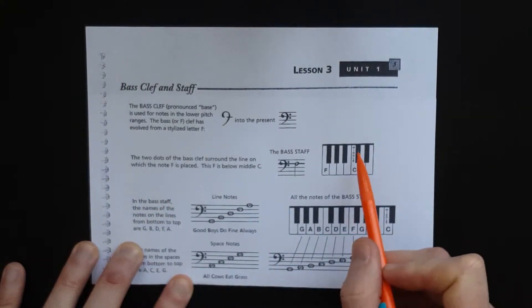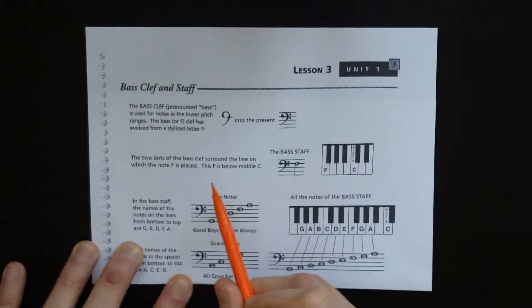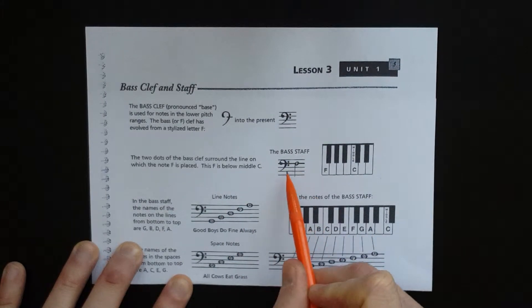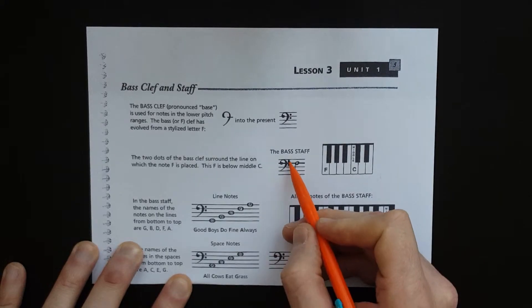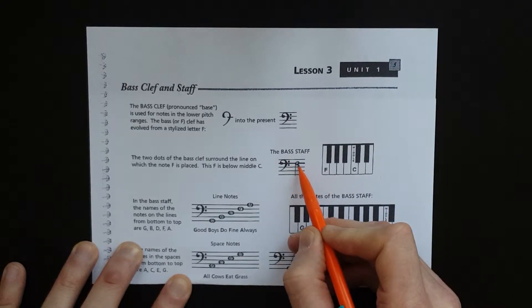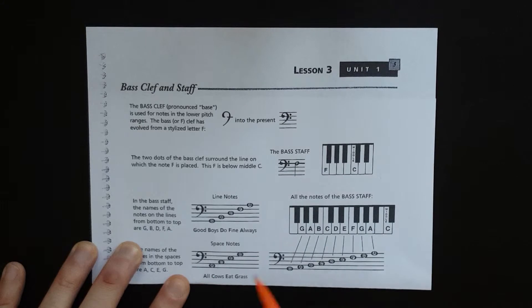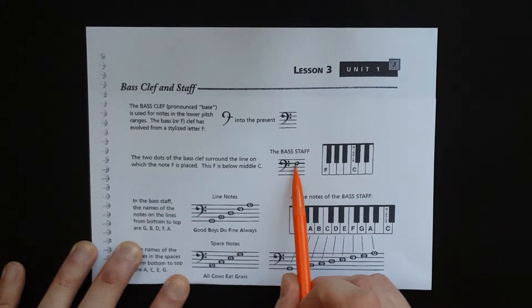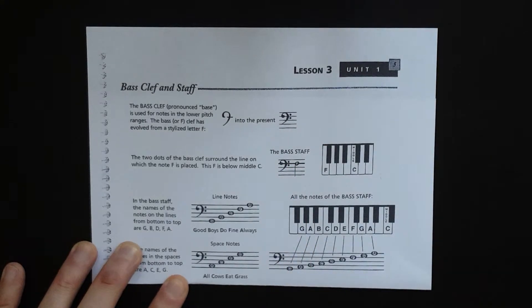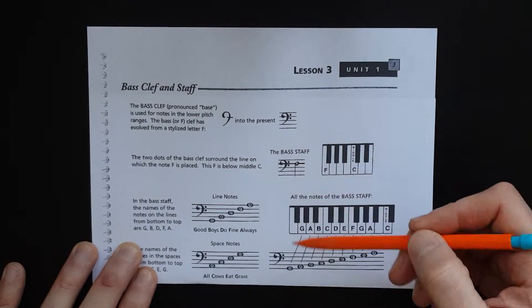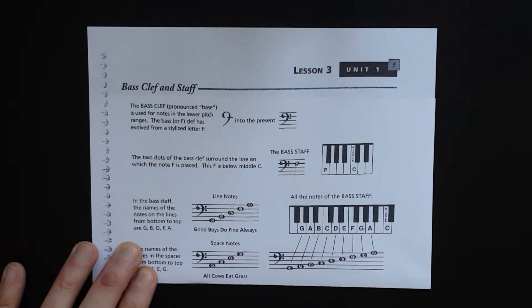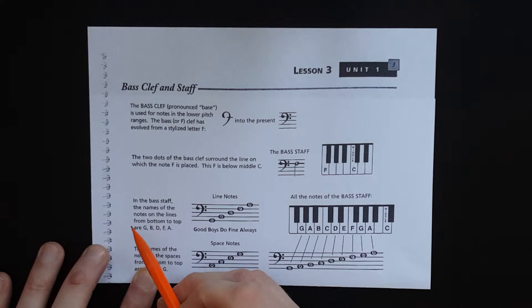So the bass staff looks like this—you've got the two dots and then the F is the one in between the two dots. If all you can remember is that in between the two dots is F, you can then go in alphabetical order from there, either lower or higher, to figure out the rest of the notes in bass clef.